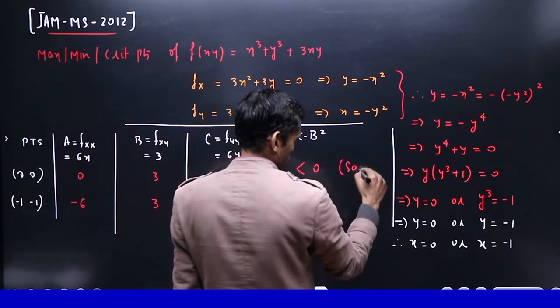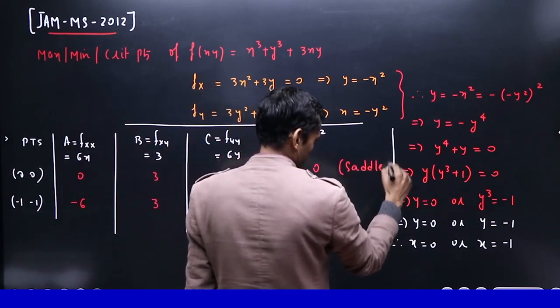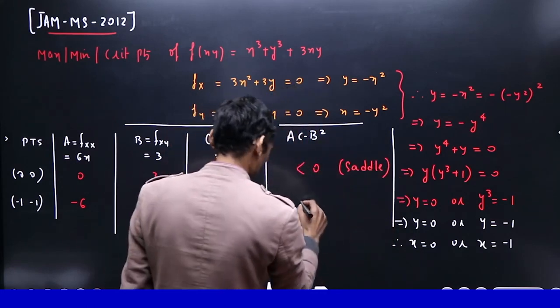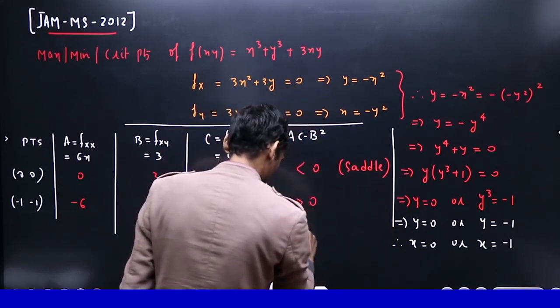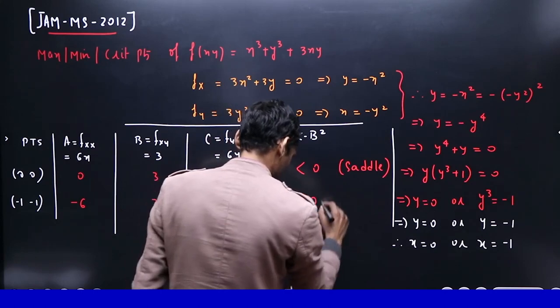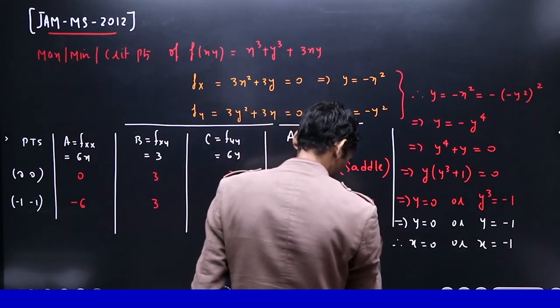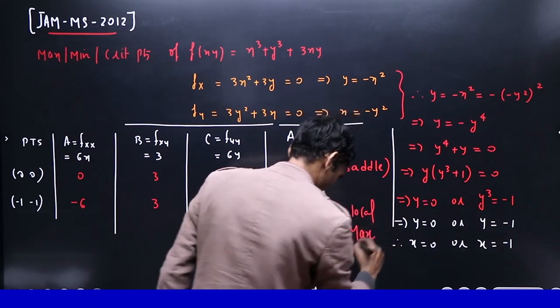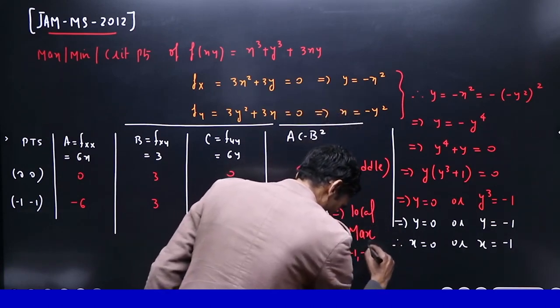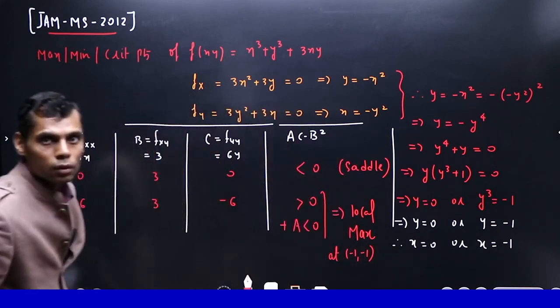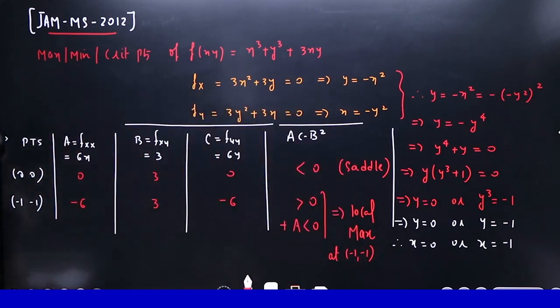You have saddle here. And the AC minus B² is positive, this is negative, local maximum at (-1, -1). Local maximum at (-1, -1), this is negative. Saddle and local maximum, great.